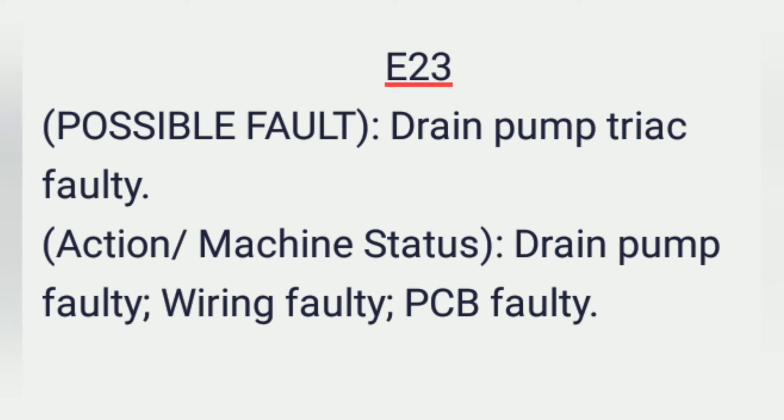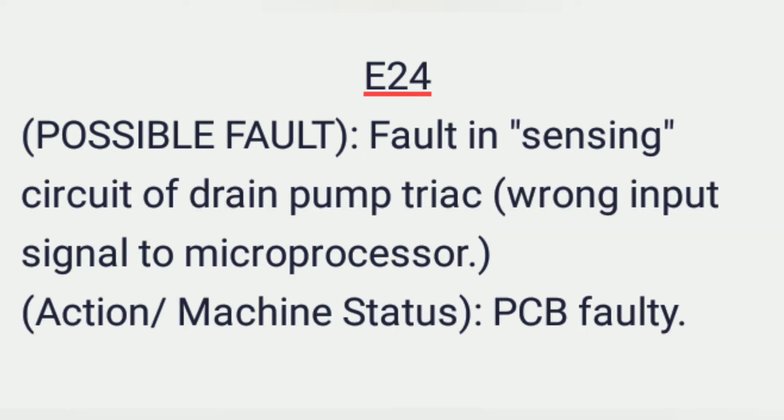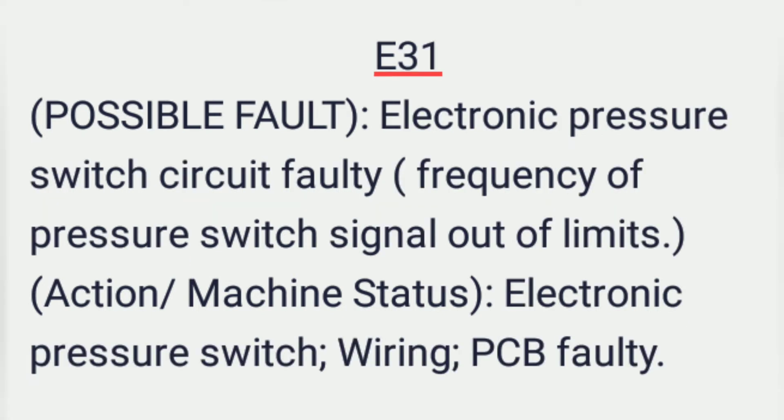E22 continued: drain pump faulty, pressure switch faulty, wiring faulty, PCB faulty. E23 possible fault: drain pump triac faulty. Machine status: drain pump faulty, wiring faulty, PCB faulty. E24 possible fault: fault in sensing circuit of drain pump triac — wrong input signal to microprocessor. Machine status: PCB faulty.